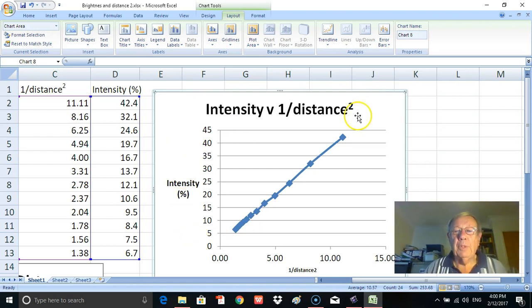So we can see there that the shape of that graph is linear. It does indicate that intensity and 1 over distance squared are related in a proportional way, simple proportional. What I'm going to do then is in fact put in a line of best fit.